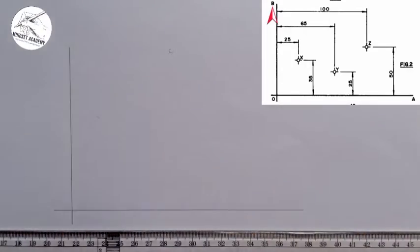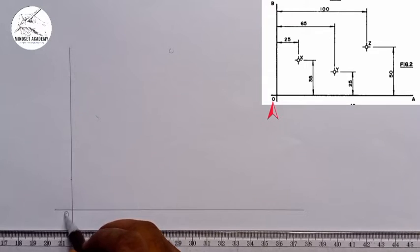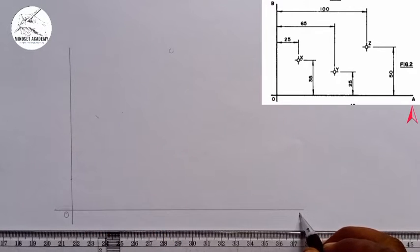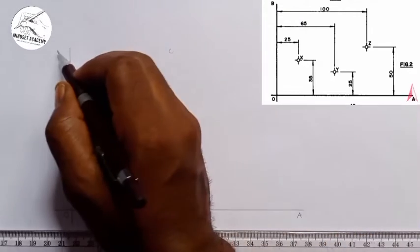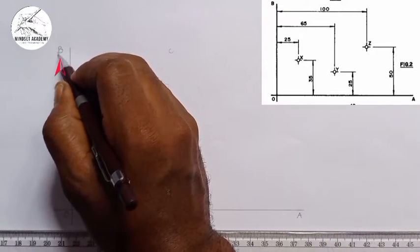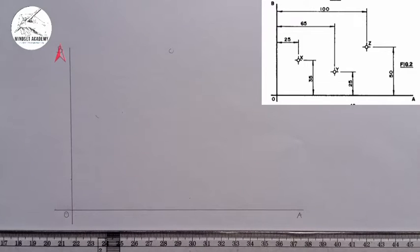So this is O and this is A at this point x-axis, and this is O and this is B, that is y-axis. And we have three points X, Y and Z. Point X is located 25 millimeter away from the x-axis.